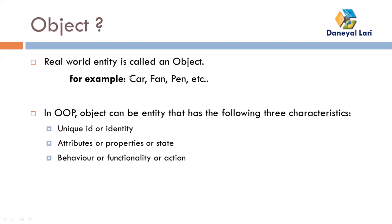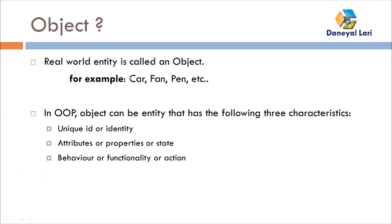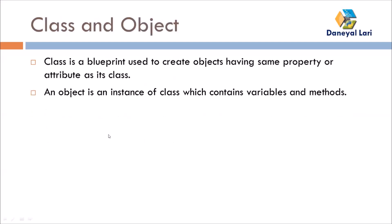Every object also has behavior. Behavior means functionality or action. Taking the example of a car object, the car has functionality: it can accelerate, move, and when you press the brake it stops. The actions you can perform with an object — acceleration, stopping, turning left or right — are called the behavior of that object. So an object is a real-world entity in existence with these three things: identity, attributes, and behavior.